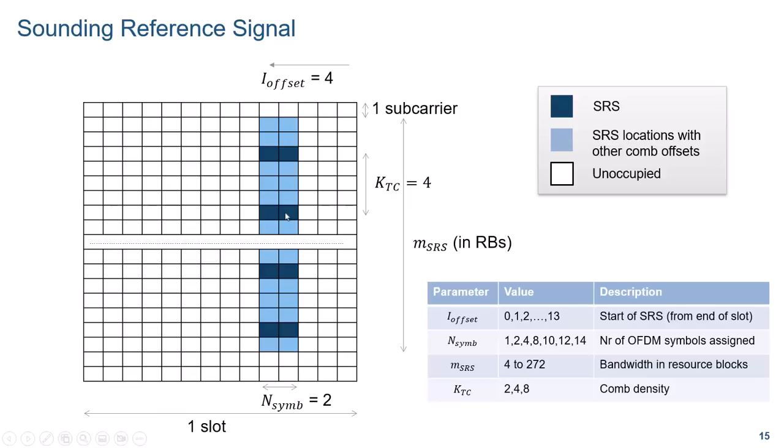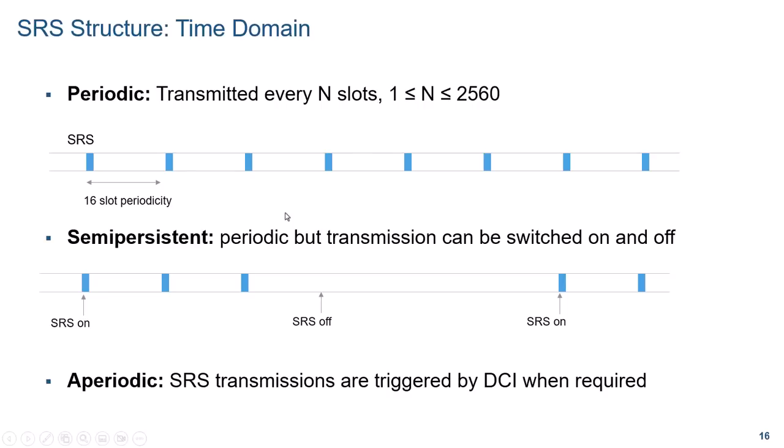The bandwidth can span between four and 272 resource blocks. There is a table in the standard that lists all possible configurations, including the bandwidth. Over time, the UE can transmit the SRS periodically every N slots. There is also a mechanism to pause and restart transmission, called semi-persistent scheduling. Finally, it is also possible for the base station to request a one-time SRS transmission, triggered by a DCI or downlink control information transmitted on the downlink control channel.